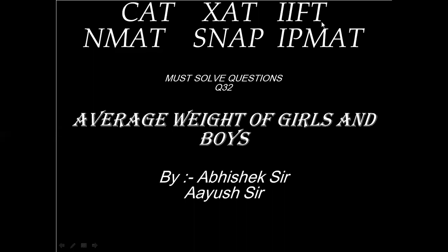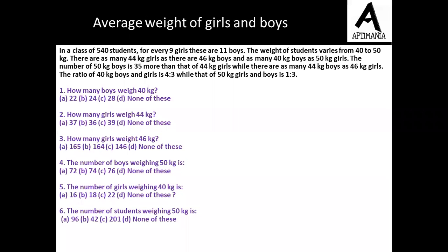Hello, in this video let us discuss equations based on the concept of averages. The question is, in a class of 540 students, for every 9 girls there are 11 boys. So let's try to solve it simultaneously.